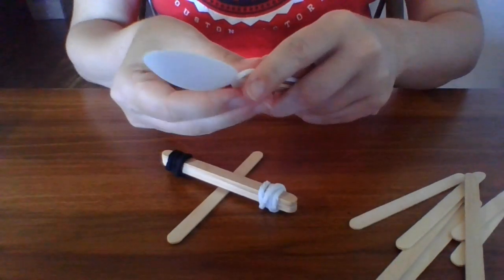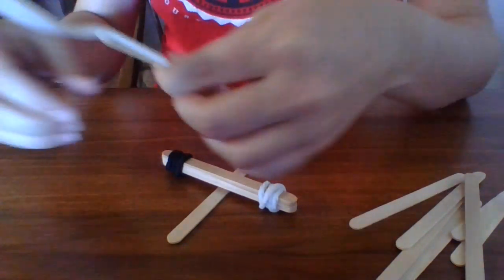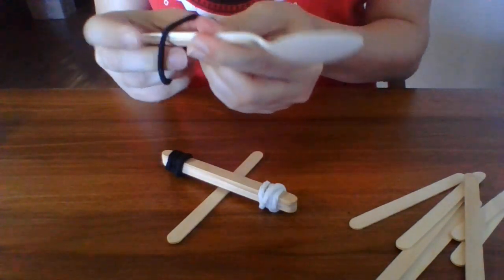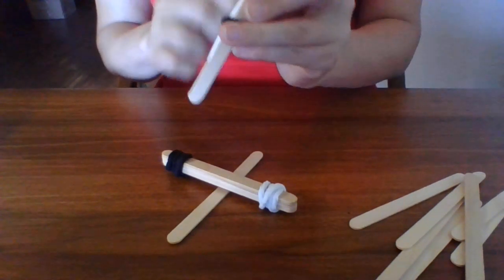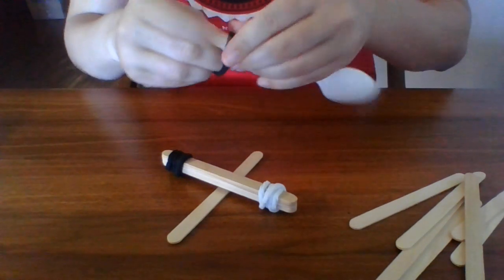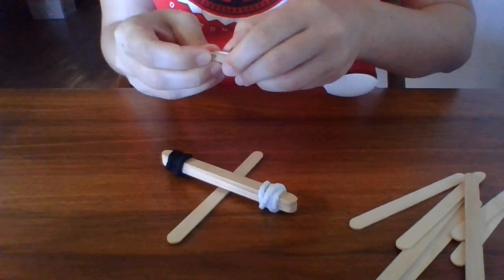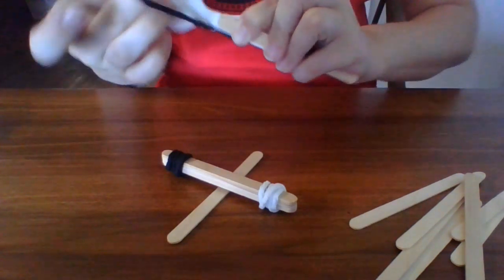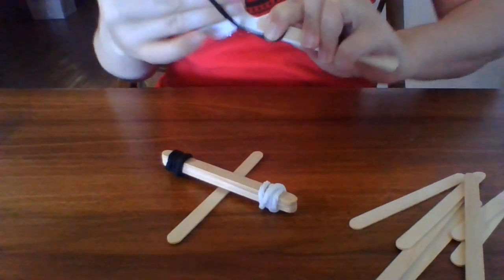So I'm gonna get one of the popsicles and I'm going to place it on the handle side of the spoon. So I'm gonna tie it down at the bottom here, okay? And then I'm going to tie it up here at the top, so that way the spoon doesn't start sliding off or anything.